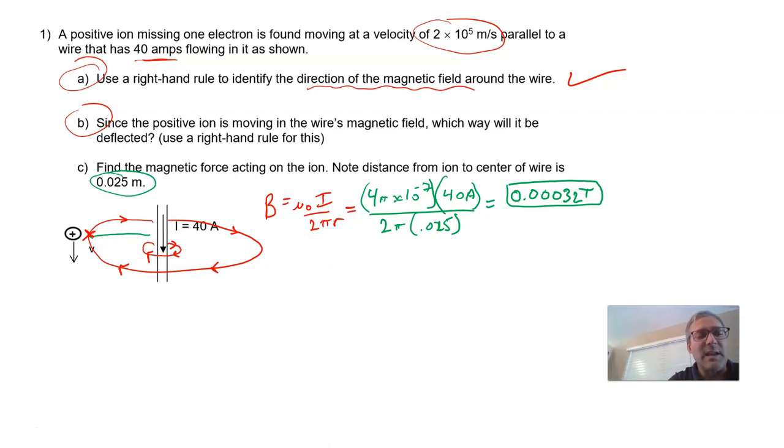For that right hand rule, four fingers and a thumb. This represents the velocity, that direction. This represents the field, that direction, the fingers. And out of the palm, the force. F is out of the palm. So that is our first right hand rule. Remember the palm is facing you like this. The force is out of the palm.